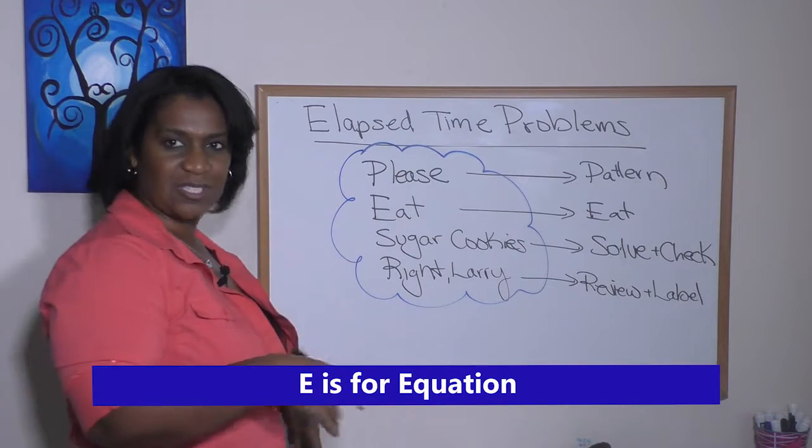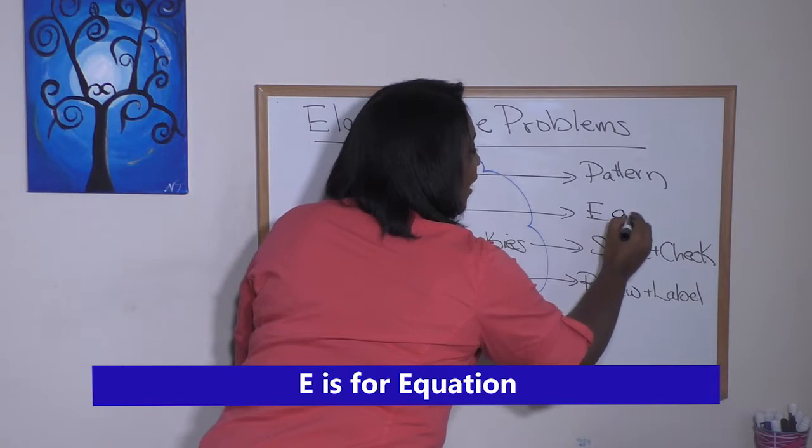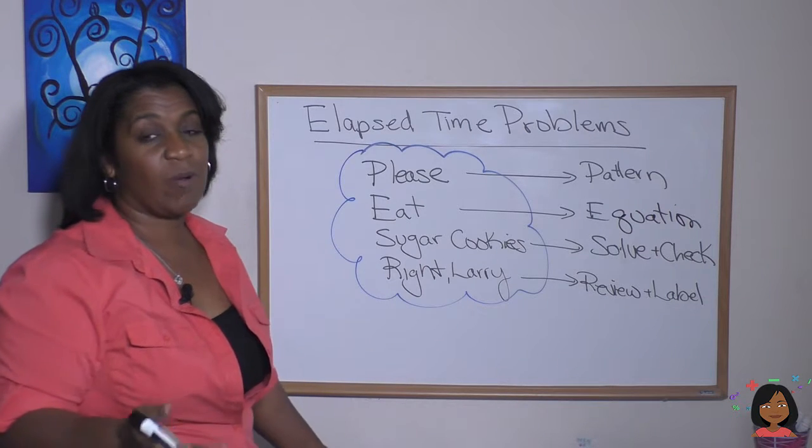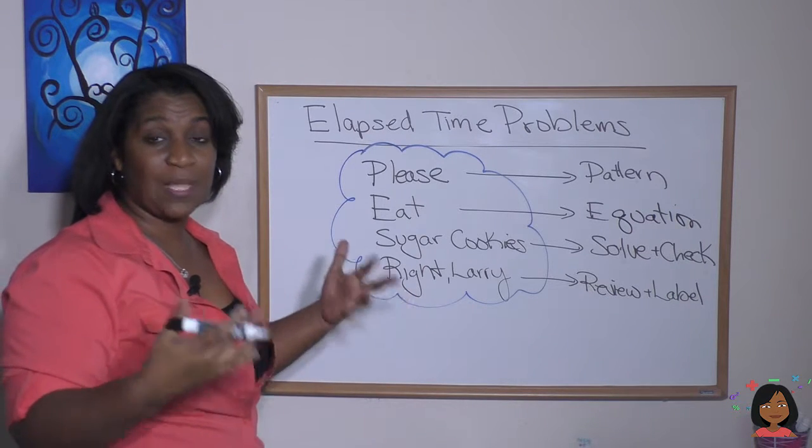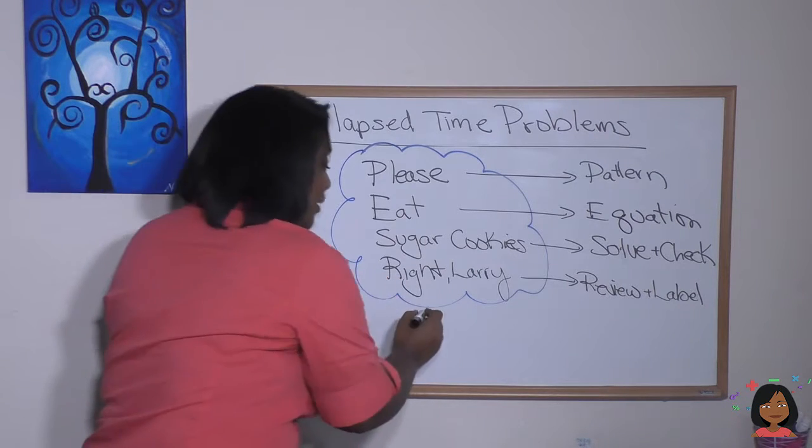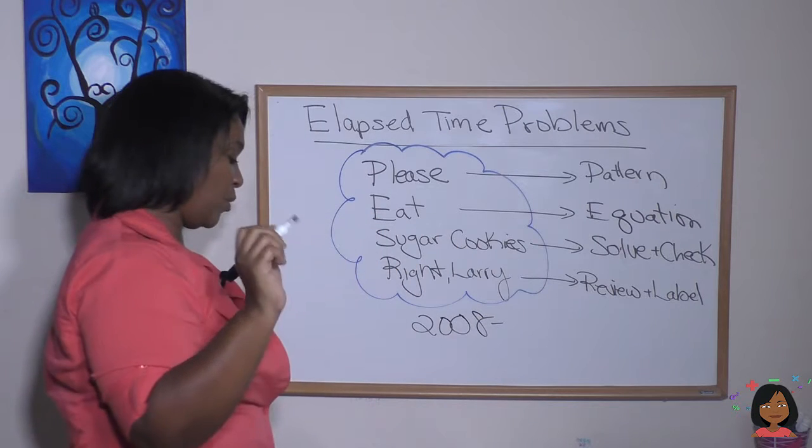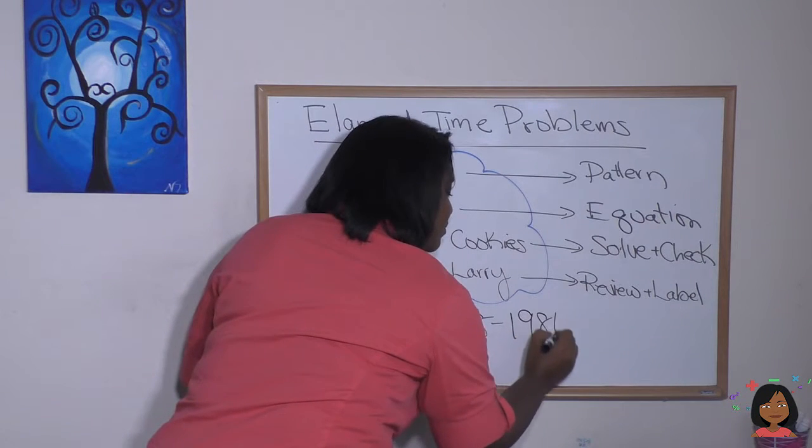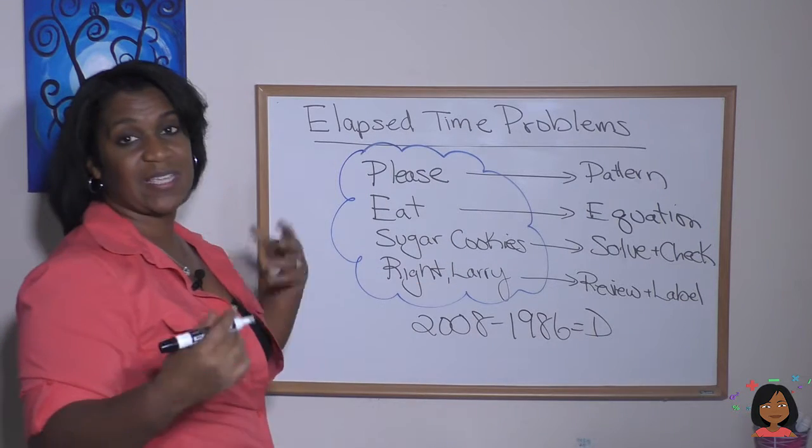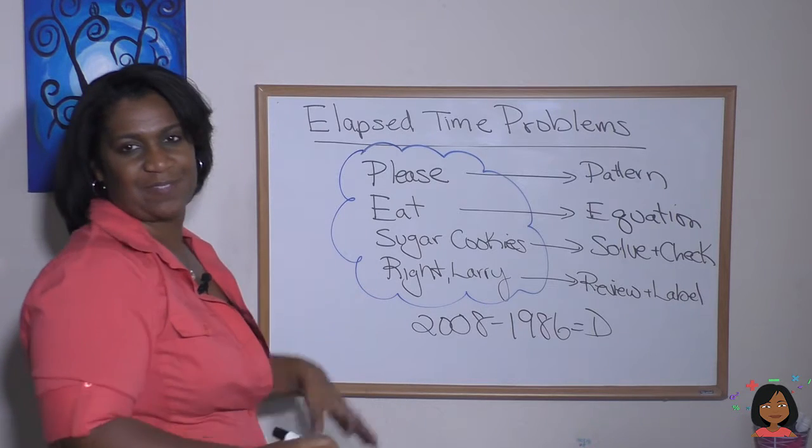That tells us that this problem is a subtraction pattern. And if you look at the E, it should say Equation. Let's figure out the equation. He won the Olympic medals in what year? That was 2008, so we put that first, the later year first. And he was born in what year? 1986. And we're looking for the difference, and we don't know what that is, so we'll say D for difference. That'll tell us how old he is, how many years he's lived.